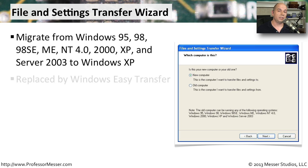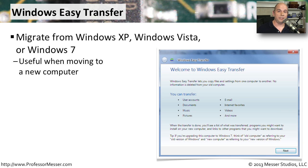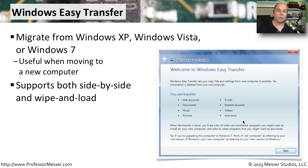This migration tool has been updated — if you're using newer operating systems, you'll probably see Windows Easy Transfer instead. If you're running Windows XP, Vista, or Windows 7 and want to migrate to a newer version, you can use Windows Easy Transfer. As you can see here, you can transfer user accounts, documents, music, pictures, email, internet favorites, videos, and more using this built-in utility. It supports both side-by-side migrations using a transfer cable and wipe-and-load migrations to an external storage device.